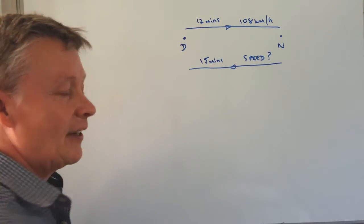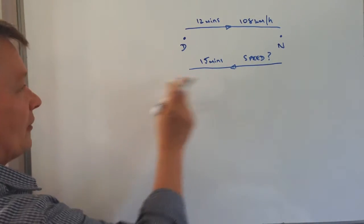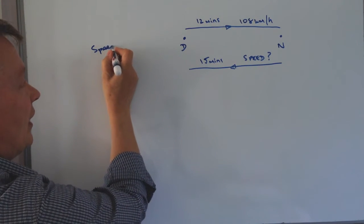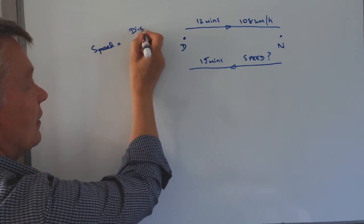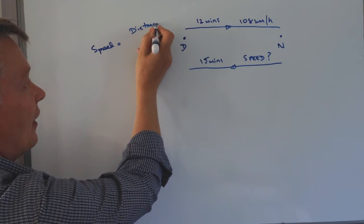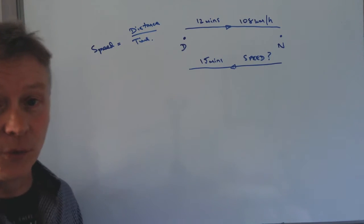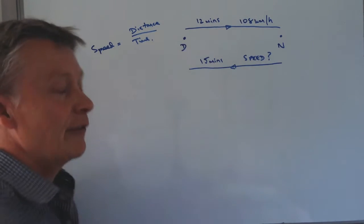So the first thing is we need to work out the distance, because in order to calculate the speed here we need to know the distance and the time. So the information that's been given to us allows us to work out the distance from the first bit of information.